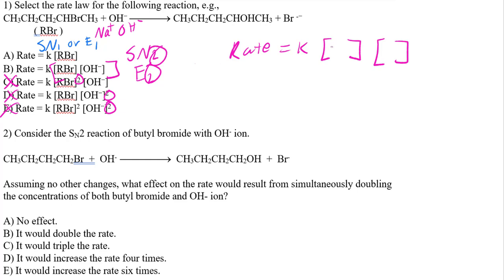Since we're working with hydroxide, which is a very strong base, it's either going to be SN2 or E2. In both cases you're going to have two brackets — your carbon chain with bromine, and your hydroxide. So SN2 or E2 gives a second-order rate law.